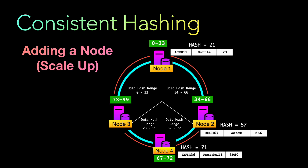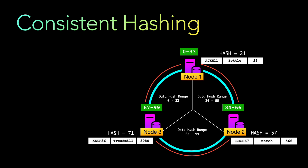Notice one key benefit: none of the data in node 1 or node 2 is touched, because their hash range is unchanged. This is what makes consistent hashing efficient — minimum reassignment of data when scaling up.